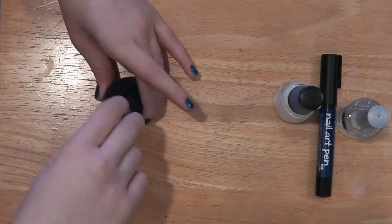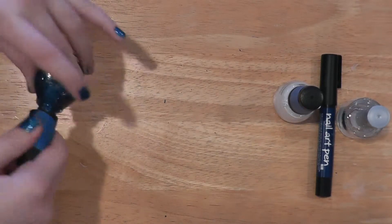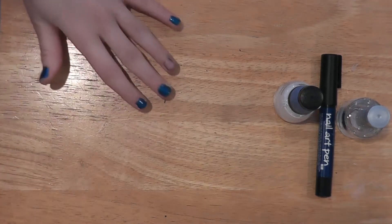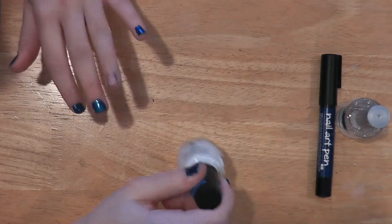Now that you're done with the main base coat you can set that aside, and you're going to take the base coat for the decorative nail.